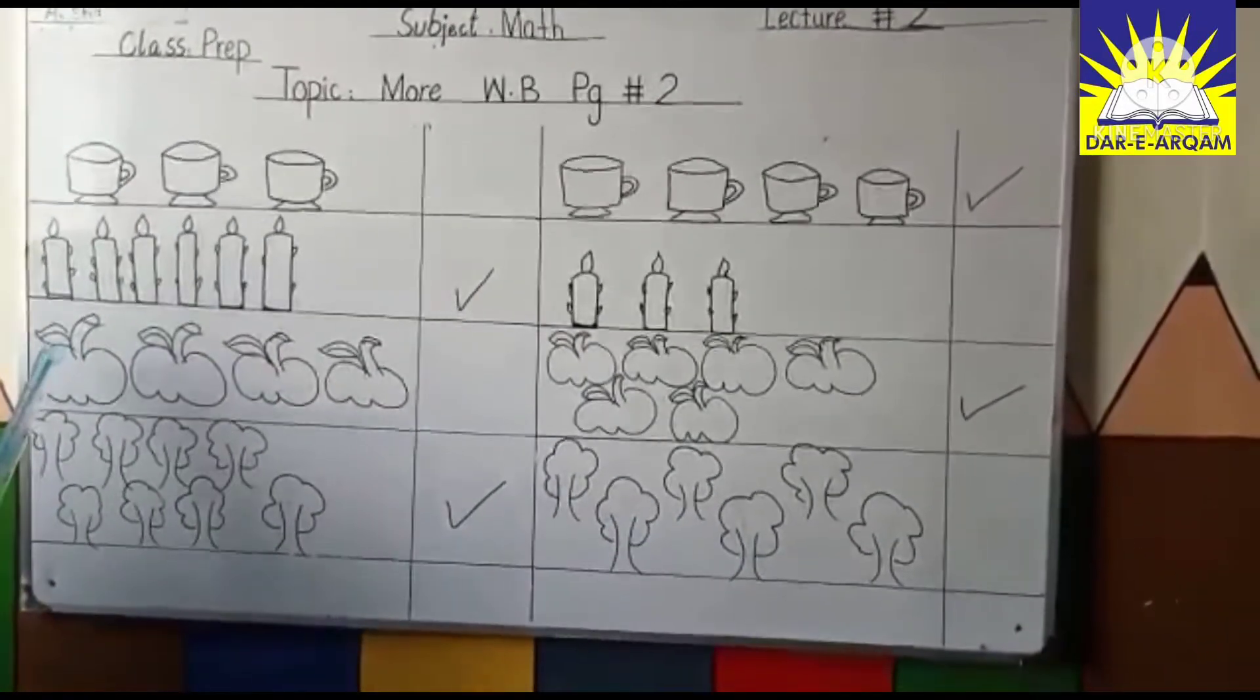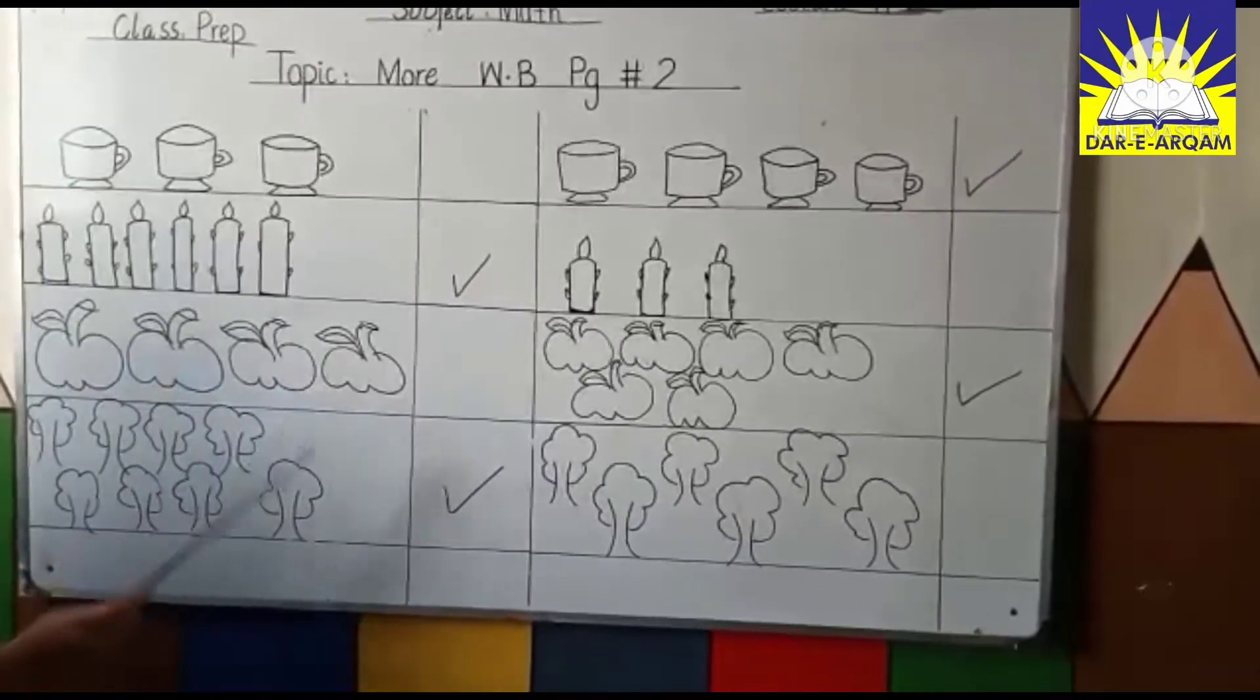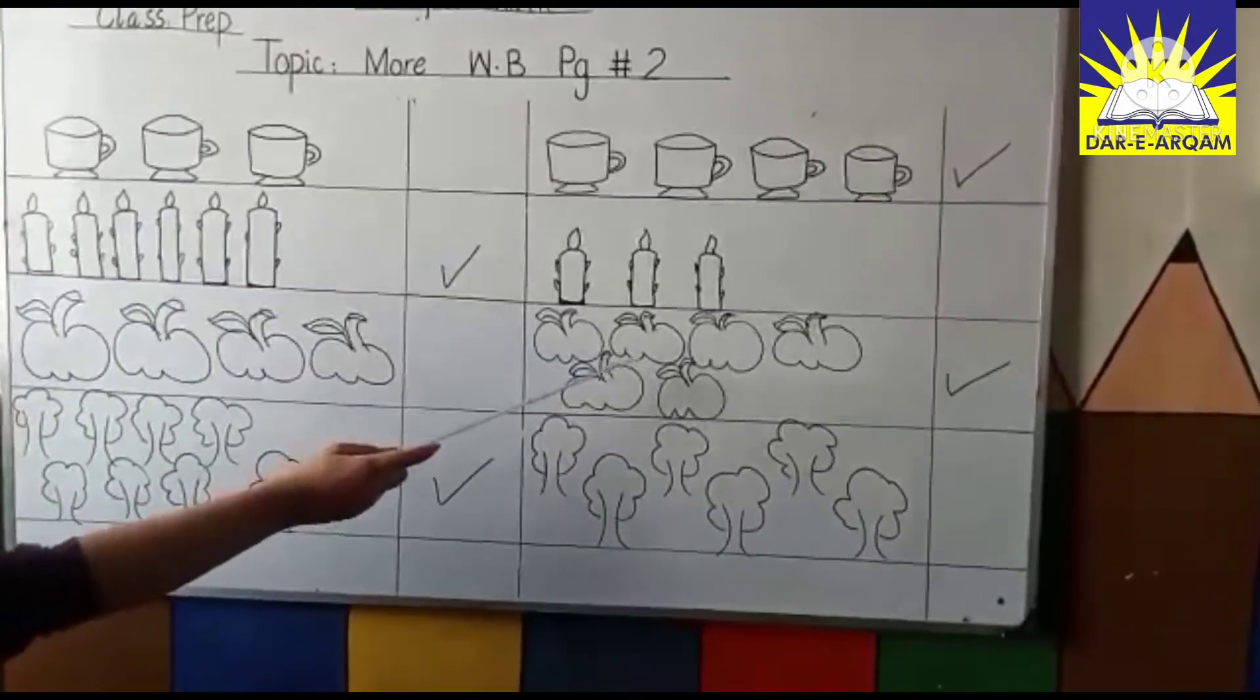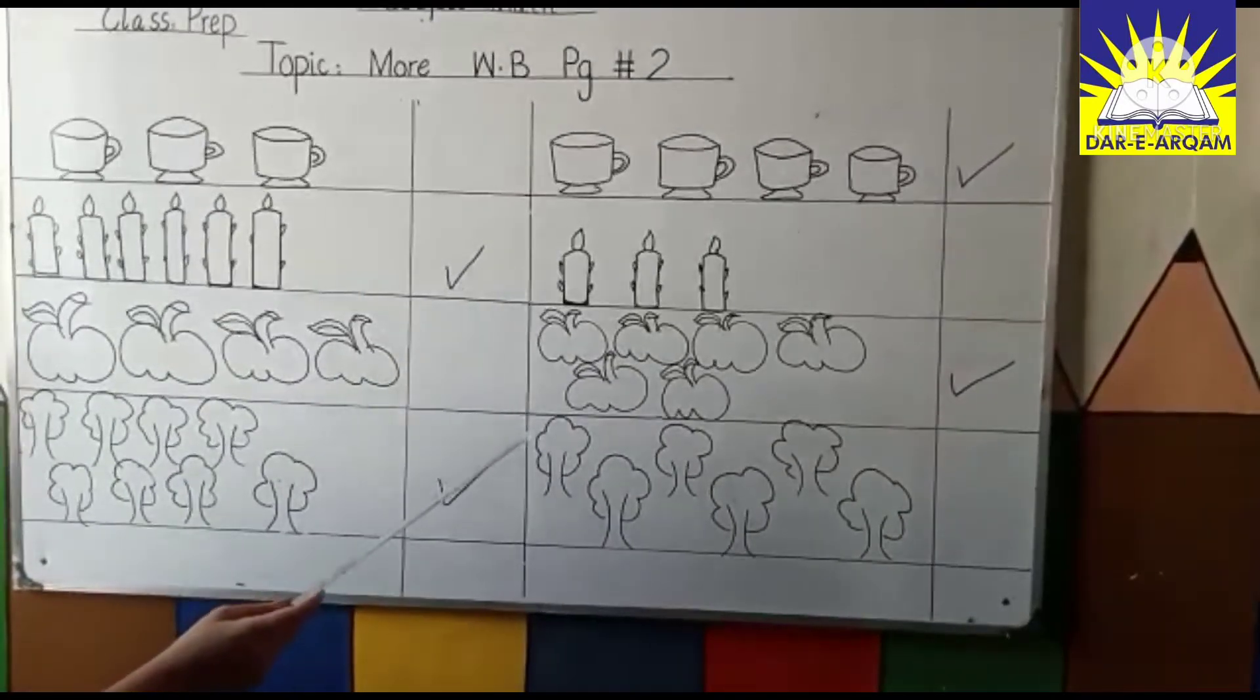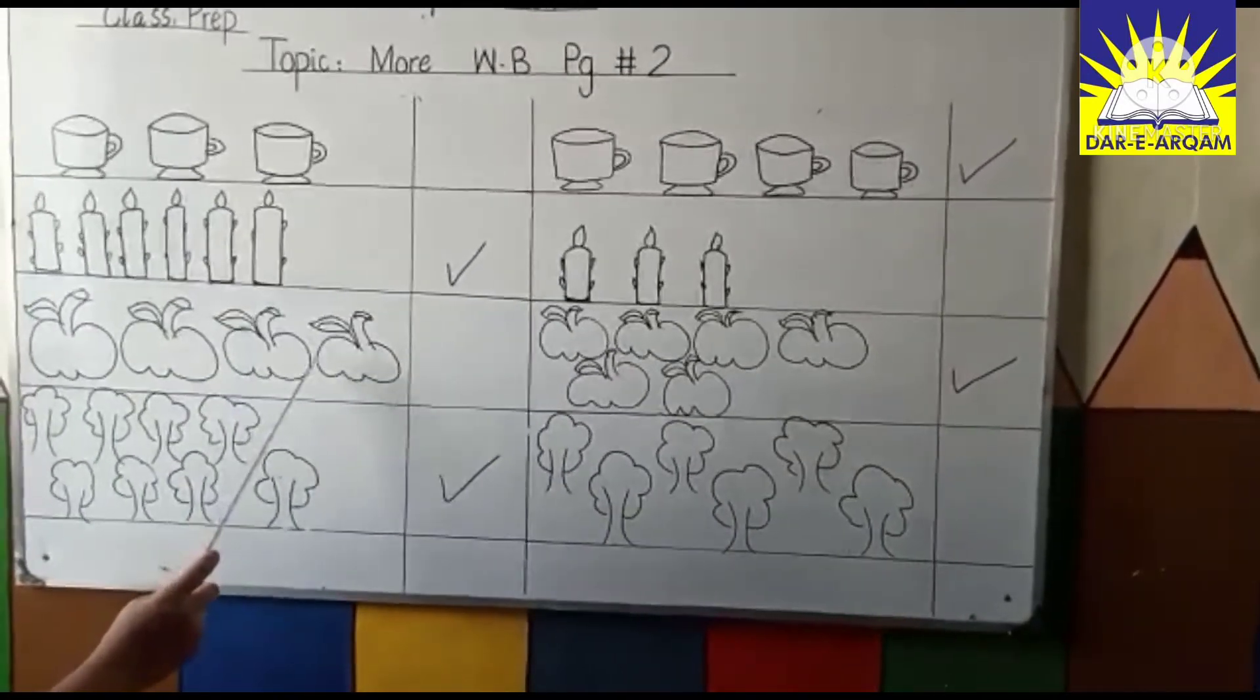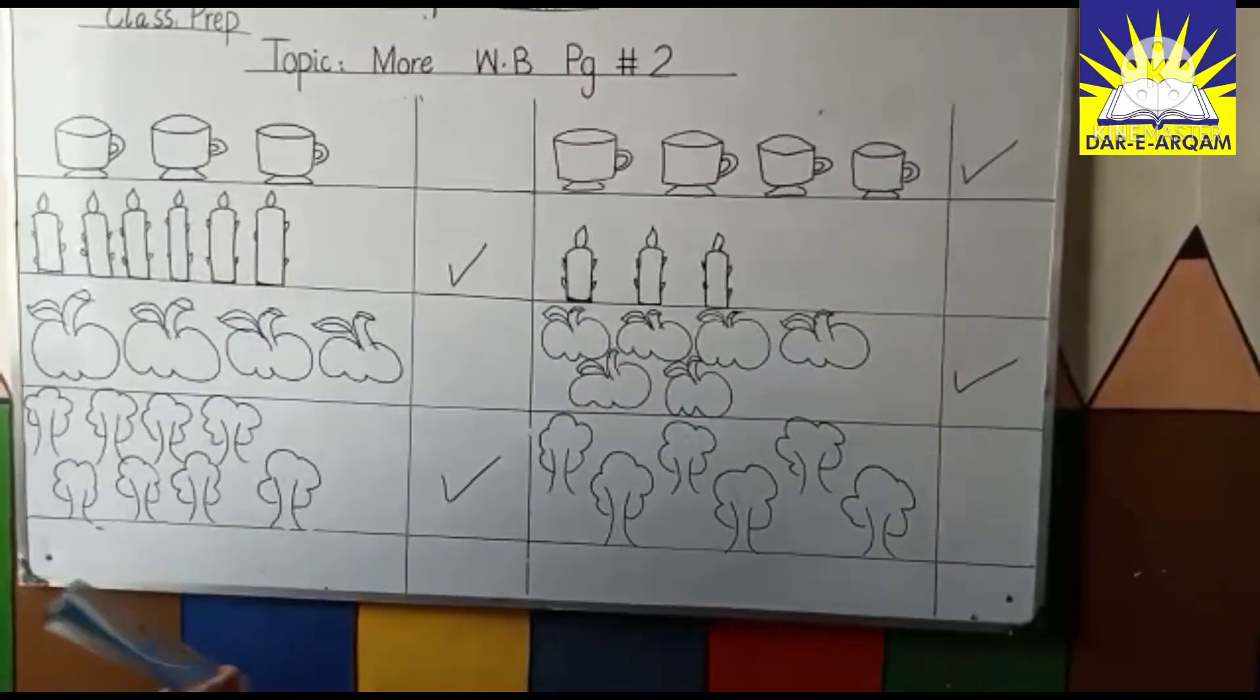Let's count the apples. One, two, three, four. And one, two, three, four, five, six. Six apples jo hain, woh zyada hain aur four apples kam hain. Is mein aapko tick lagana hai.